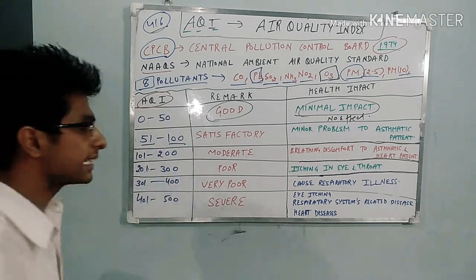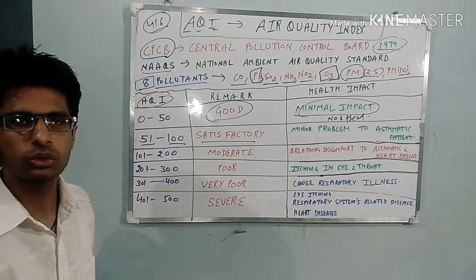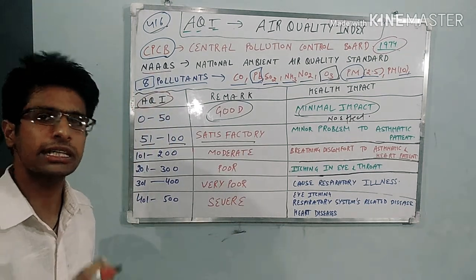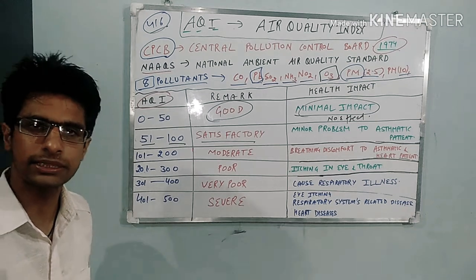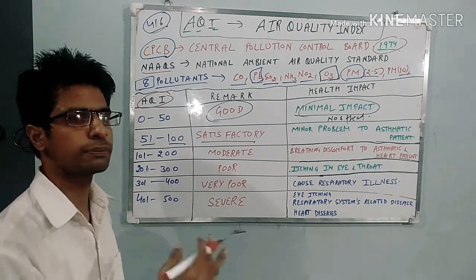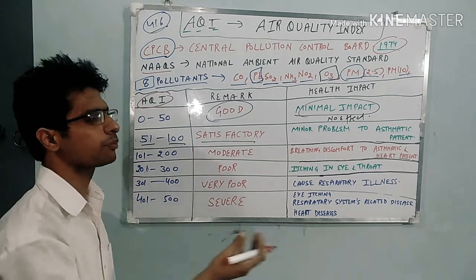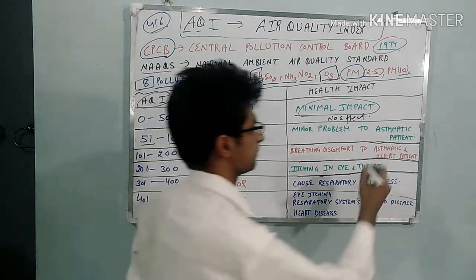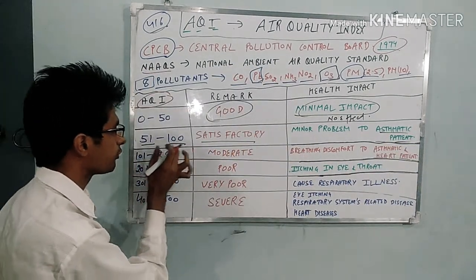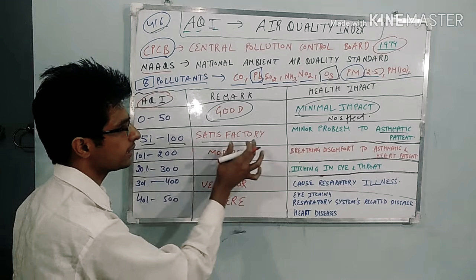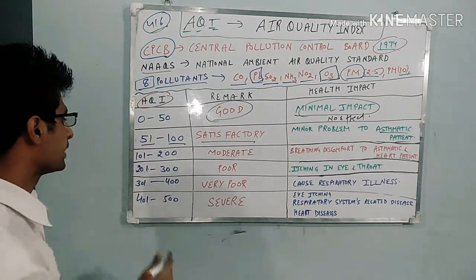The range 51 to 100 is classified as 'Satisfactory.' In this range, there are minor problems for severe asthmatic patients, but no effect on healthy persons or those without heart disease — only minor problems for asthmatic patients.